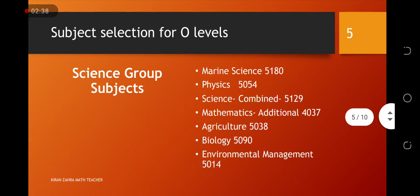Ab Cambridge jho hume basically science group subjects jho offer kar raha hai, wo hai marine science 5180, physics 5054, iski labah science combined form 5129, uski labah add math 4037, agriculture 5038, biology 5090, environmental management 5014. In me se kooyi se tine subject bhi select kar sakte hai, jho aap ko suitable lege hai, liekin jho hume ne recommend ki hai, wo combination one or combination two hai.